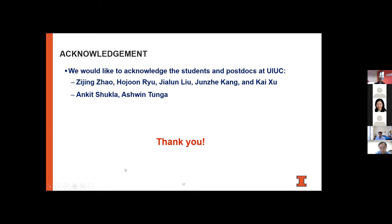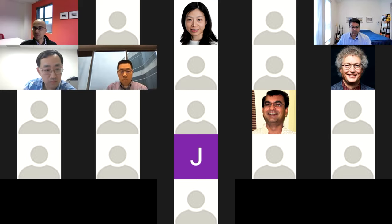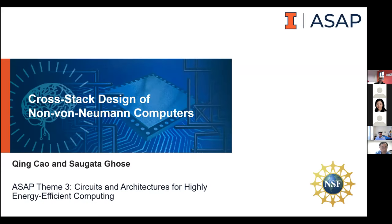Thank you Wenjuan and Ching. Now for the third talk by Ching and Sogata. We're going to shift gears and talk about the truly cross-stack work we're hoping to do as part of the ASAP center — specifically processing in memory, defined broadly as processing with logic near memory cells or tightly integrated with them, or processing using memory as with RACER. Our goal is to build end-to-end prototypes of these systems, solving all issues from the top to the bottom of the stack.